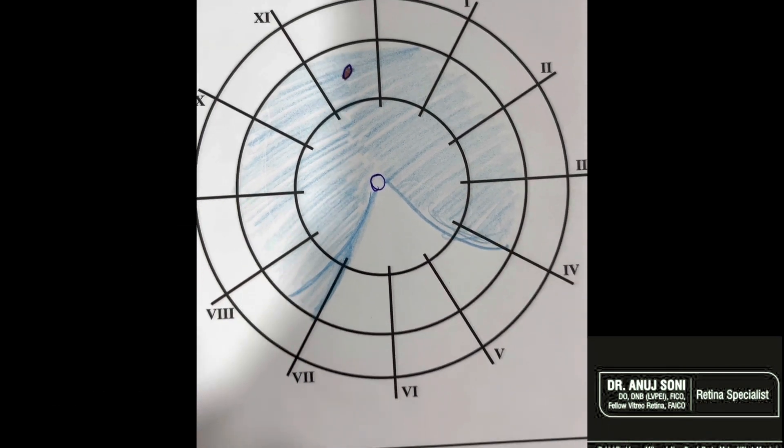Now coming to a total retinal detachment or in a case where the RD crosses the 12 o'clock meridian in the superior position, these RDs generally originate from holes at or near the 12 o'clock.